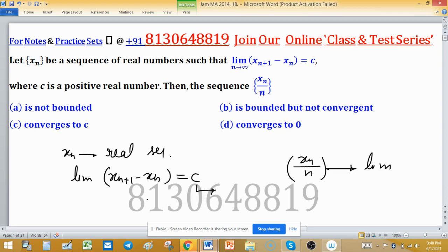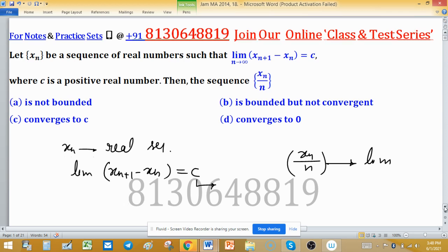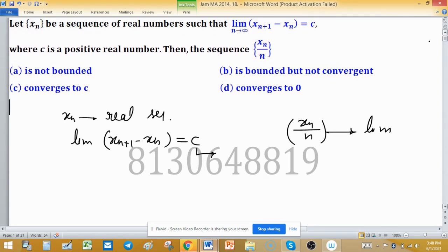We are solving this problem by trial and error method. Consider a sequence which satisfies the hypothesis. Let XN equal NC, or you could choose 2N, 3N, or 4N if you assign a value to C.